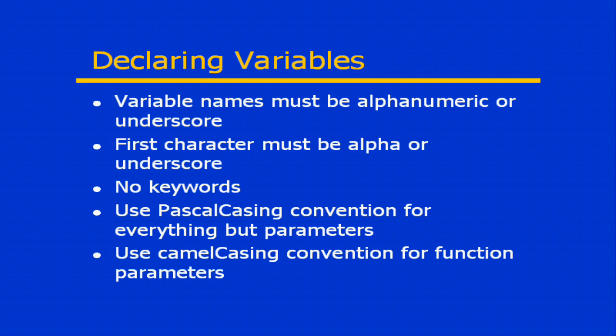The Pascal casing convention indicates that the first letter of every single word is uppercase as you push the words together to form the identifier. With the camel casing convention, the very first letter of the first word is lowercase. Since C# is case sensitive, you have to stick to a known pattern and use it consistently throughout so that it will be predictable.